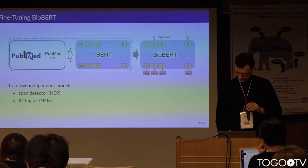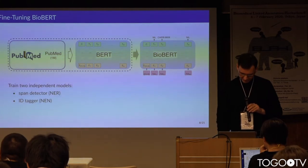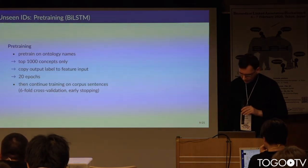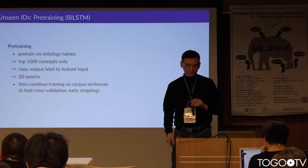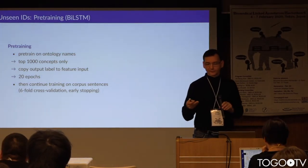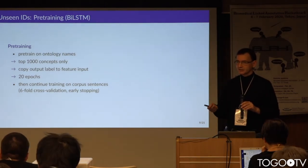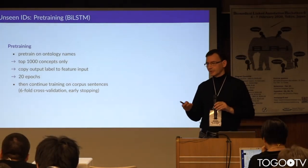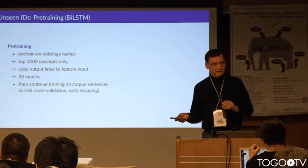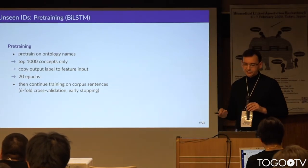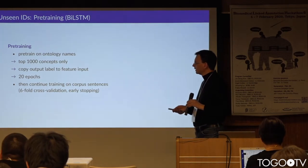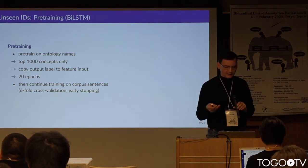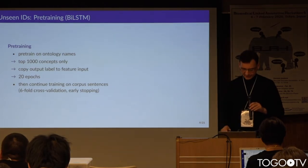These are two different approaches that we used. In our participation in the shared task, we wanted to compare them. One big problem in this kind of task is that the set of IDs is huge — if you have genes, diseases, proteins, and chemicals, you have millions of IDs. You cannot train successfully a system to recognize all possible IDs.